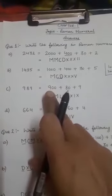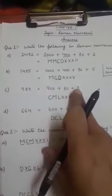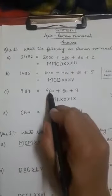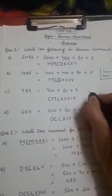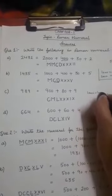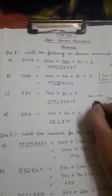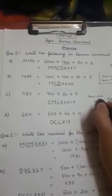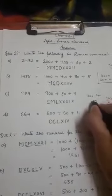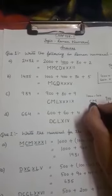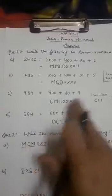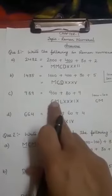Next is 989. Expand the number first. 900 plus 80 plus 9. Then for 900, how can I get 900? 1000 minus 100. For 1000 I have M. And to subtract 100 I will write C to the left of M. So CM is for 900.